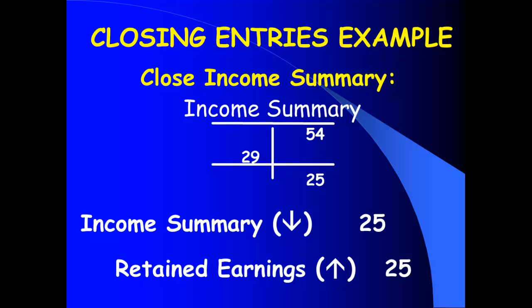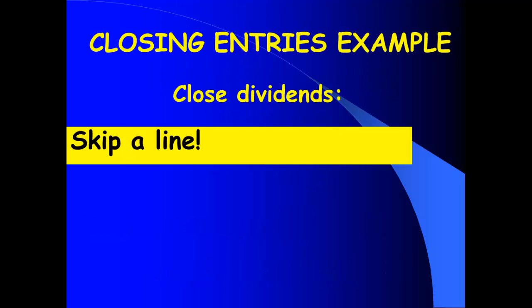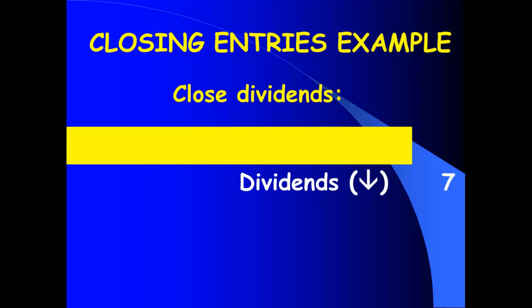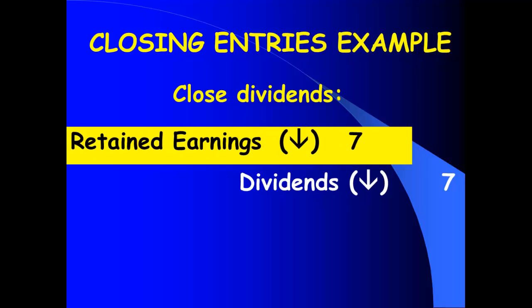Fourth closing entry: close out dividends. Dividends have a debit balance, so to close out dividends I credit dividends. Skip a line — come back to the debit in a moment. I'm going to credit dividends, and my debit goes to retained earnings. Debits go before credits, so debit retained earnings on the first line, then credit dividends. Debiting retained earnings makes it go down — and paying dividends makes retained earnings go down also. So when you make these entries, look at the impact on retained earnings to see if it's logical: net income makes retained earnings go up; net loss or dividends make retained earnings go down.